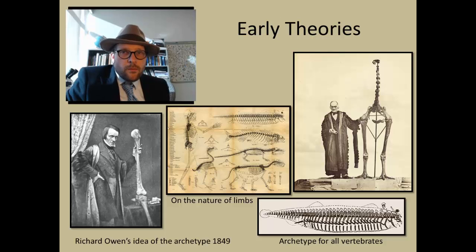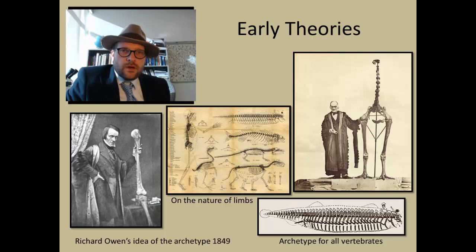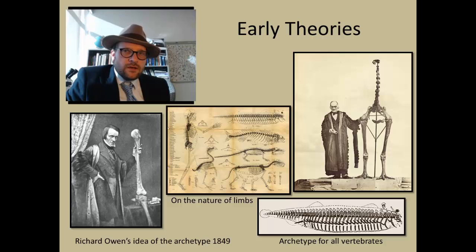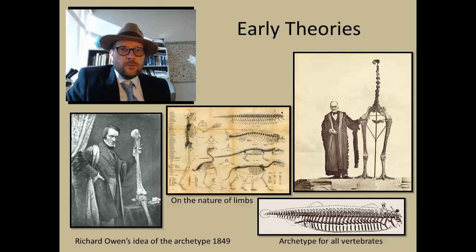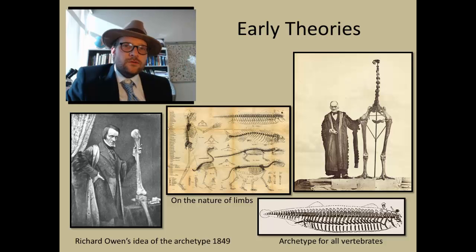Owen took the idea a little further when he proposed an archetype. An archetype or body plan is the shared characteristics of a group of similarly related organisms. By proposing such an idea, Owen, as well as some of his contemporaries, began to document these similarities between organisms, suggesting some sort of relationship.